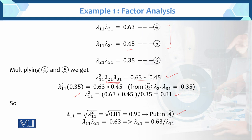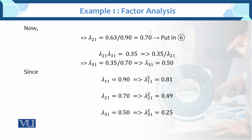Taking the square root, lambda_11 equals 0.9. Putting lambda_11 equals 0.9 into equation 4: 0.63 divided by 0.9 gives lambda_21 equals 0.7. Then putting the value into equation 6 gives lambda_31 equals 0.5. So lambda_11 = 0.9, lambda_21 = 0.7, lambda_31 = 0.5, and lambda squared values are 0.81, 0.49, and 0.25.